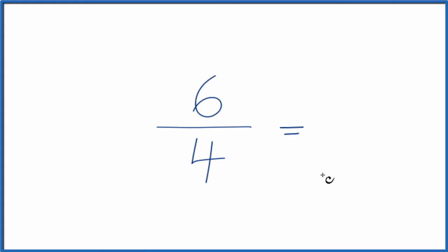To do that, we need to find a common factor, the greatest common factor. So when I look at six and four, since they're both even, I'm just going to divide both by two.